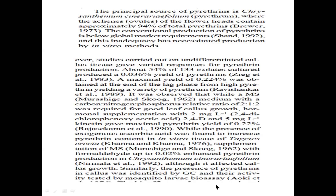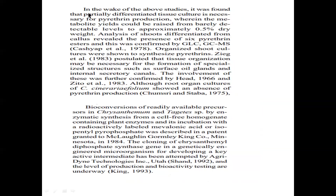They test the efficiency of pyrethrin by using it against mosquito larvae — with a known number of larvae and a known concentration of pyrethrin, they calculate the percentage of mortality to equate to insecticide efficiency. They found that partially differentiated callus tissue gave the best results for pyrethrin production, and root cultures were also used.